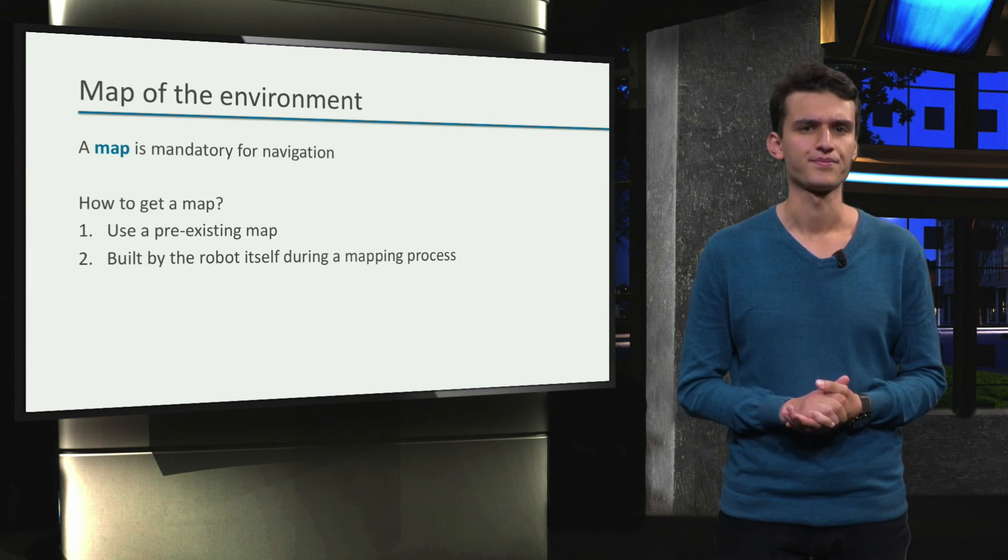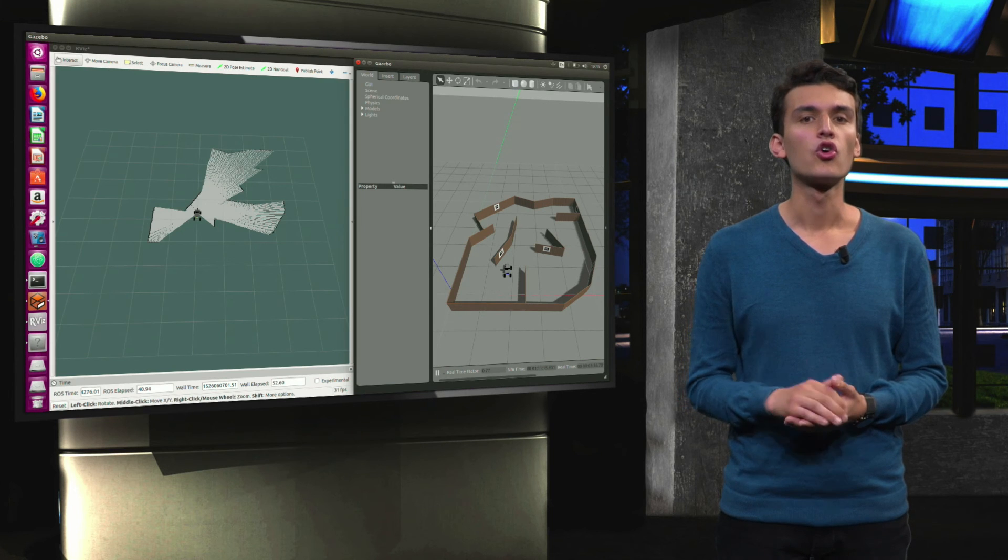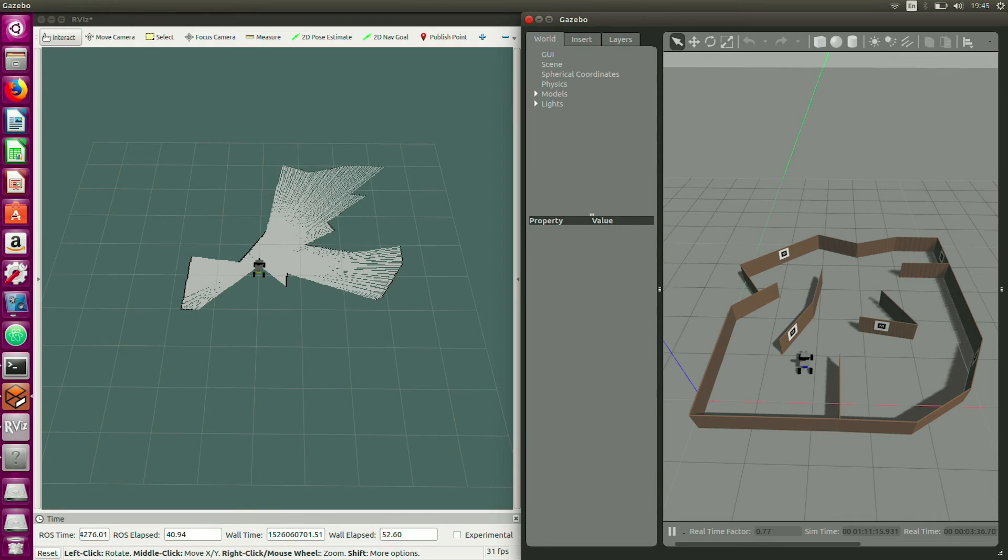Let's take a look at an example. Right here we have a mobile robot. I have chosen a different robot than a turtlebot, to show you that the concepts are the same. We have Gazebo on the right-hand side, and Rviz on the left-hand side.